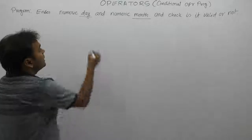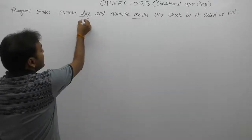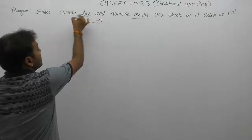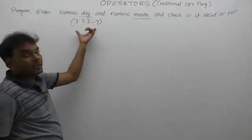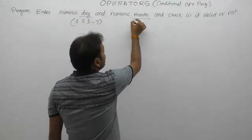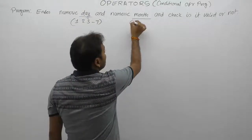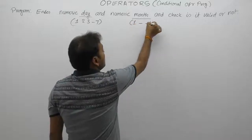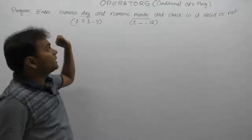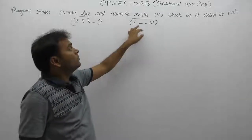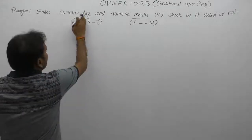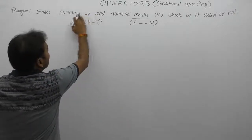The possible days - there are seven days possible, which means this is the range of valid numeric day. Same with month - total number of months are 12 months. Therefore, this is the range for numeric day and this is the valid range for numeric month.